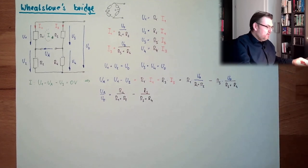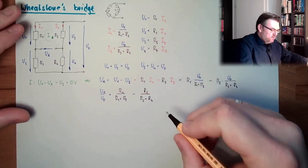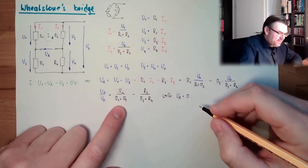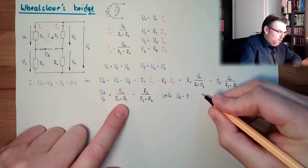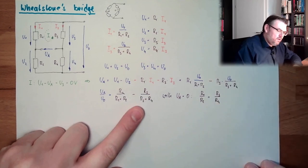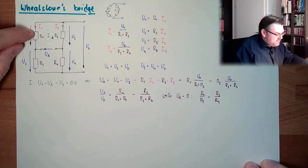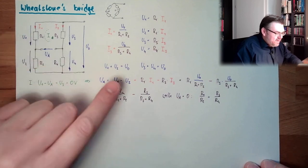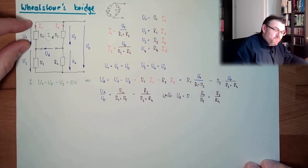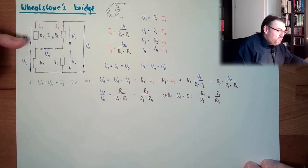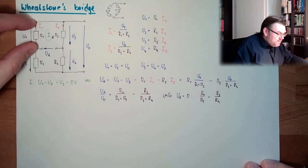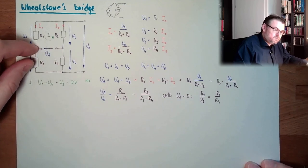So what if we want Ua to equal zero? We realize that this is only the case if R1 divided by R2 equals R3 divided by R4. This is because both sides are dividing the same supply voltage U0 — like a voltage divider — and this depends on the ratio of the resistances. If the ratio of the resistors on both sides are equal, then the voltages at the midpoints are equal, and here is zero.